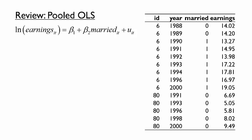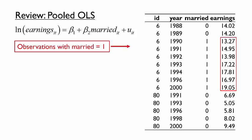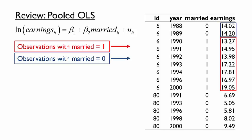Since our regression model compared the earnings of married men to unmarried men, it essentially compared the years of observations for which the first individual was married to the years when he was not married, and all of the years of observations for the second individual. Does this difference really tell us the effect of being married? We might be concerned about omitted variable bias here.